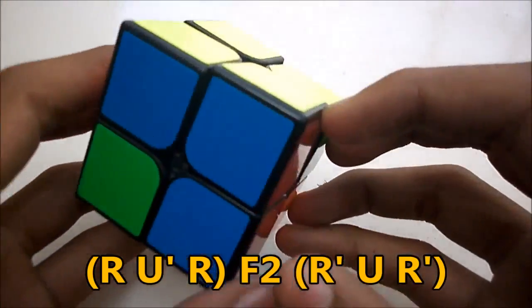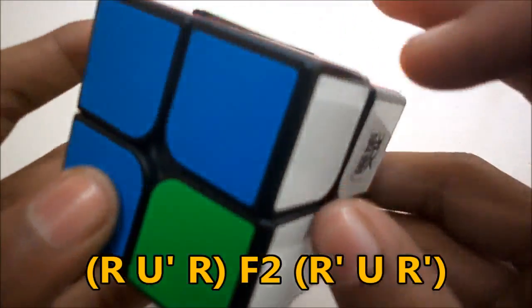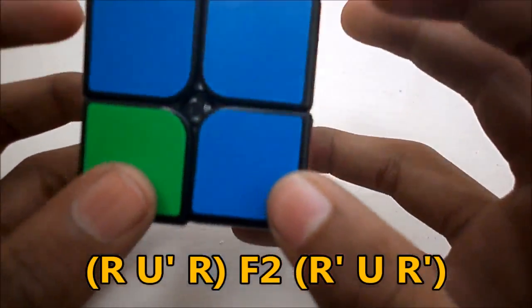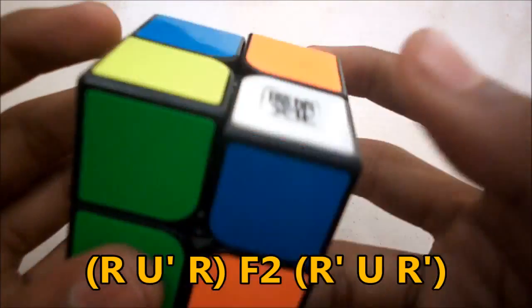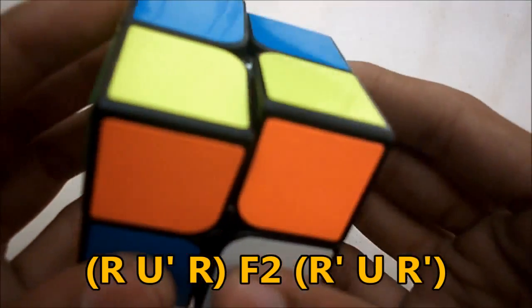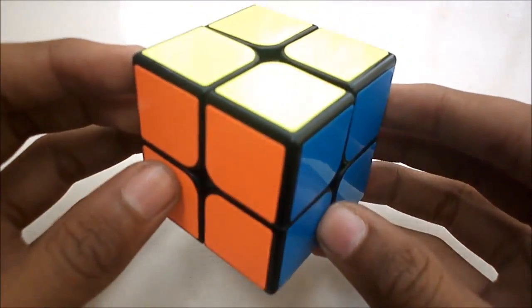So the next case is when you have an adjacent swap on the top and the diagonal swap on the bottom. You hold the bar in front of you and perform the algorithm R U' R F2 R' U R' and that solves the case.